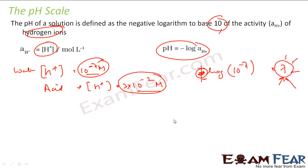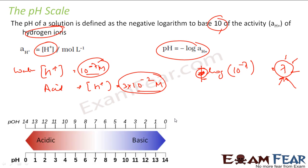So pH is 7 means the concentration of H plus is 10 to the power minus 7. pH is 3 means concentration of H plus is 10 to the power minus 3 moles per liter. There's a pH scale where 7 is neutral. If you go less than 7, it is acidic. More than 7, it is basic. The maximum value is 14 and minimum is 0. Why pH equal to 0 is very acidic and why pH equal to 14 is basic - we'll take this in the next few slides.